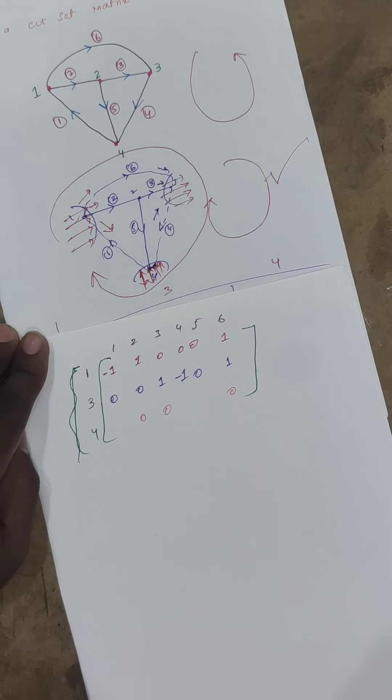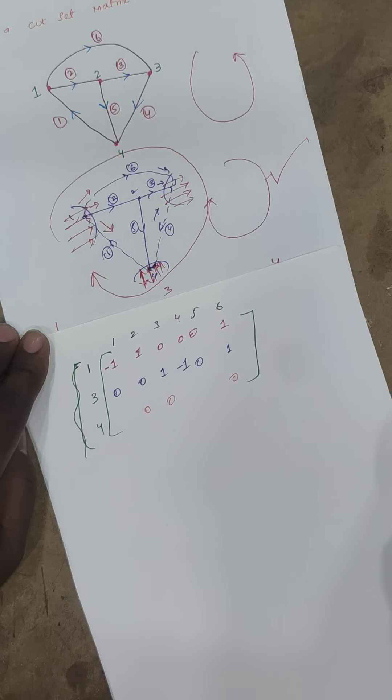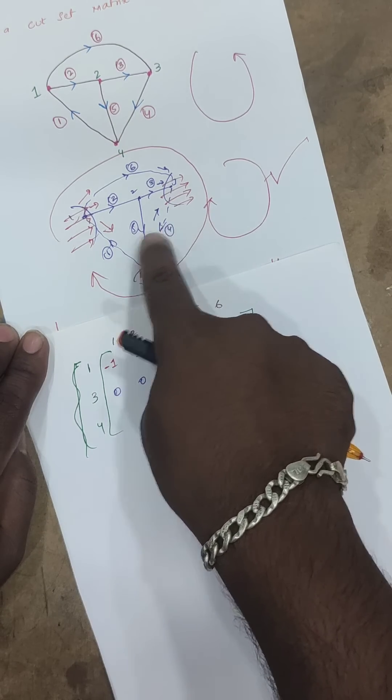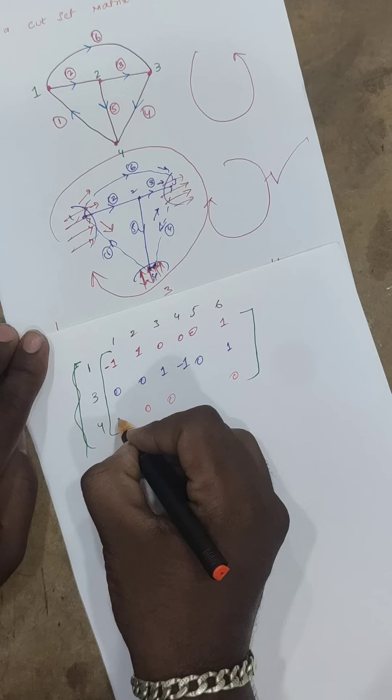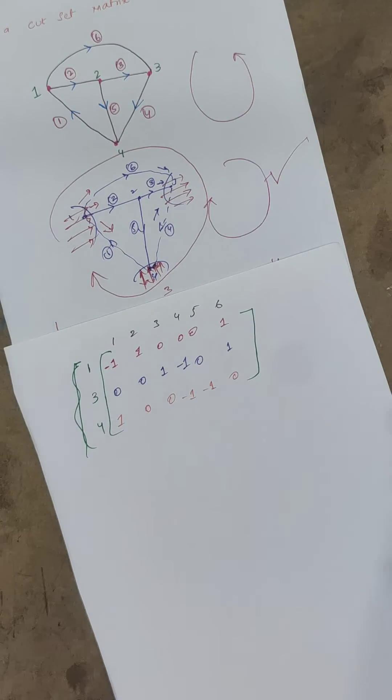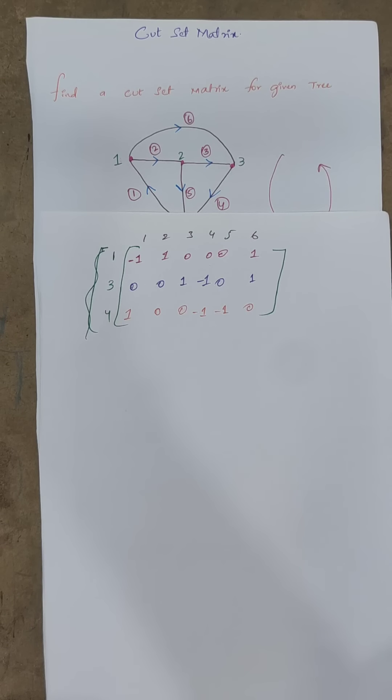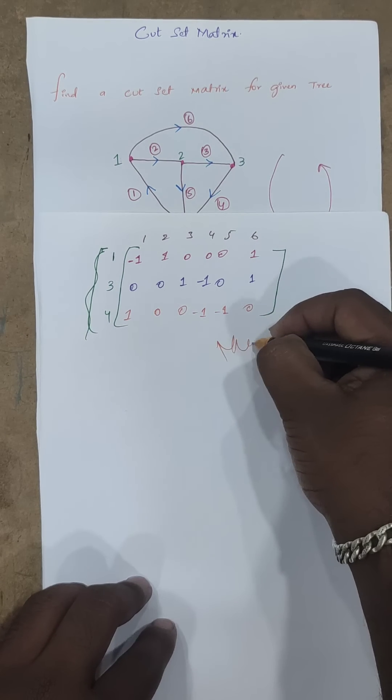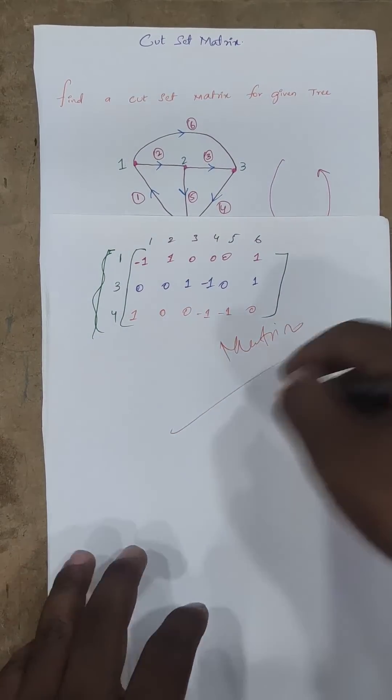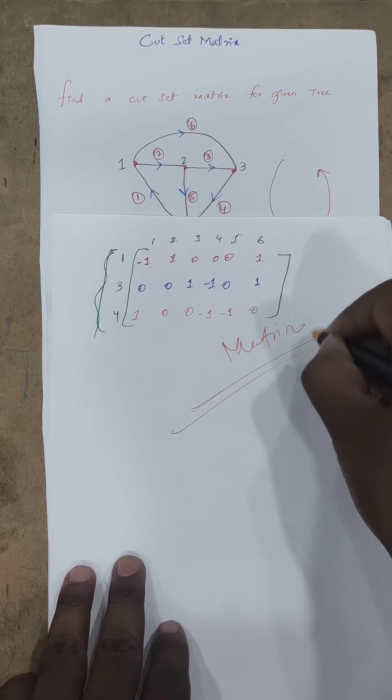If you say one, three, four is the cut. Look, this is the opposite direction, this is the same direction. So this is one, this is minus one. Then the tie set, the tie set is easy. This cut set is the matrix form. So we have tie set and cut set.